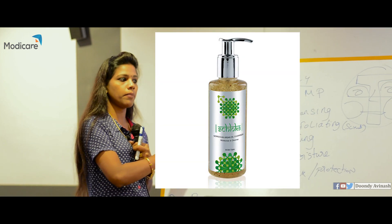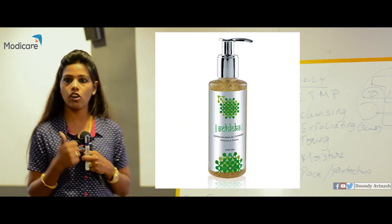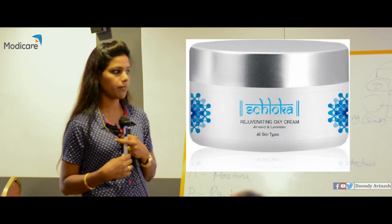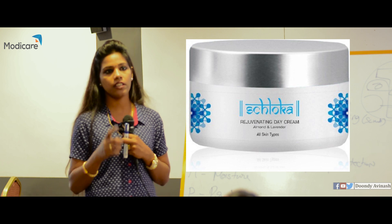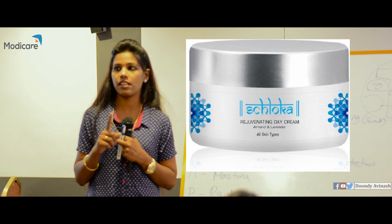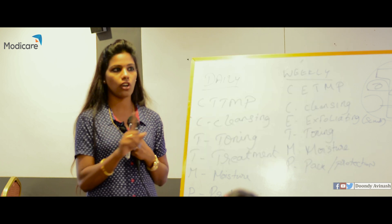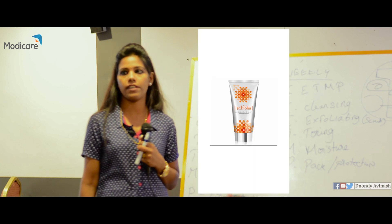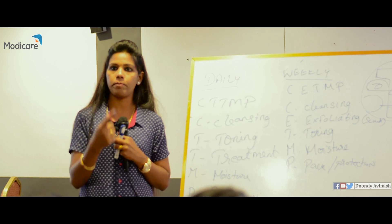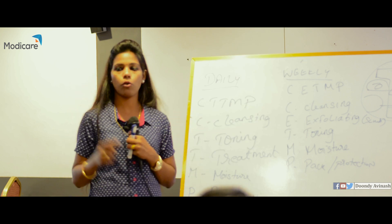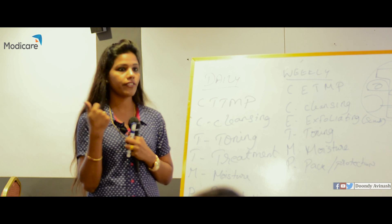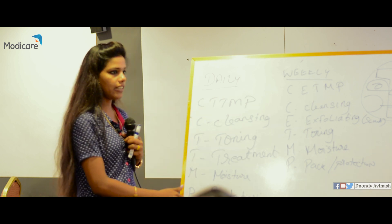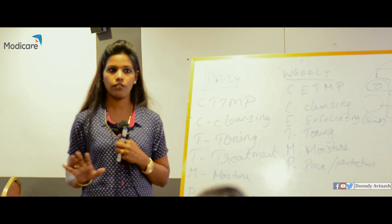For dry skin: in the cleansing part, we have Moroccan Argan Oil Cleanser. For treatment and moisturizing, we have Rejuvenating Day Cream — this day cream is only for dry skin, not for normal or oily skin. And again the protection part uses SPF. To repeat for dry skin: Moroccan Argan Oil Cleanser, then 3-in-1 toner, then Rejuvenating Day Cream, then SPF.